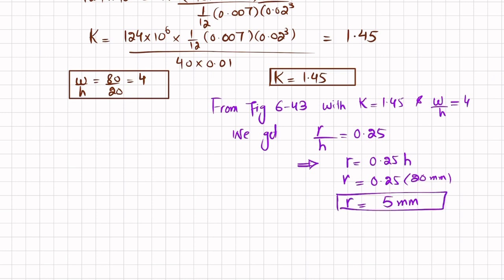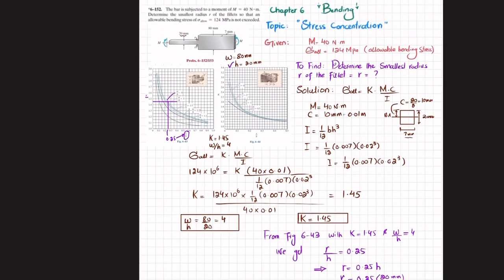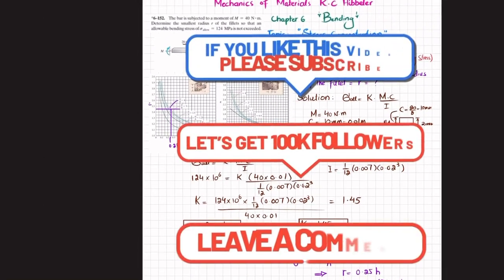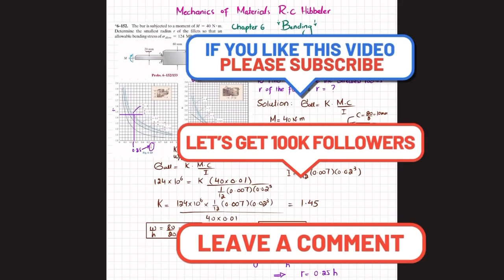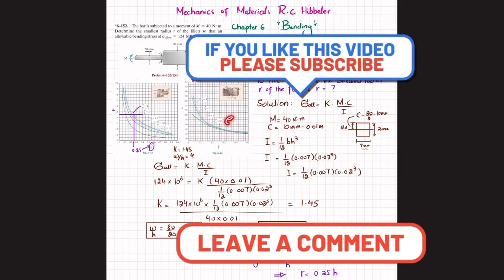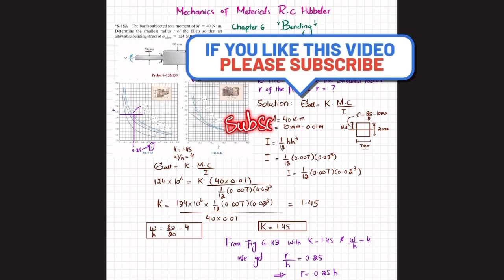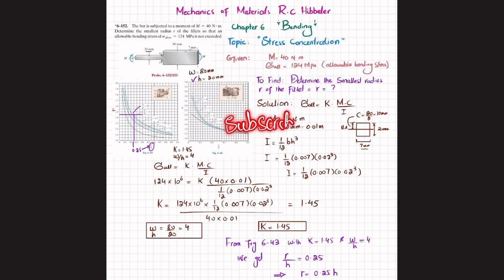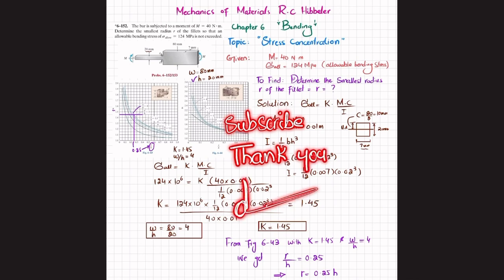The radius of the fillet is 5 millimeters, which is the answer to problem 6-152. I hope you enjoyed this video and learned from it. If you're new to my channel, please subscribe and press the bell icon for notifications about my latest videos. If you have any questions, you can ask in the comment section. Thank you for watching.